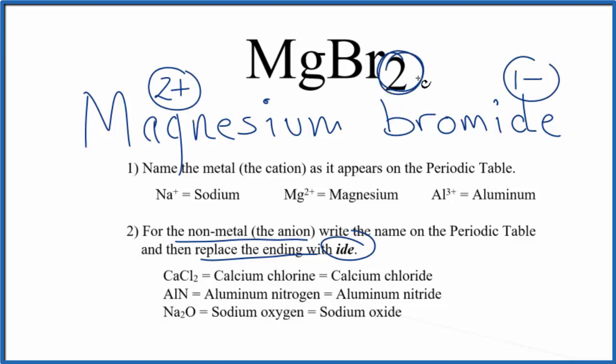One minus times two, that's two minus, two minus and two plus. They balance out. So the formula for magnesium bromide is MgBr2, the name, magnesium bromide.